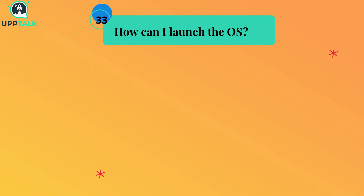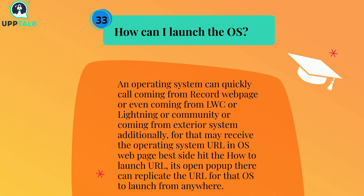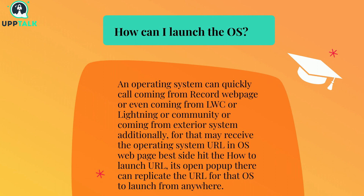How can I launch the OmniScript? An OmniScript can be called from a record web page, from LWC, Lightning, or a community, or from an external system. To get the OmniScript URL, on the OS page right side, hit the 'how to launch URL' option — a pop-up opens where you can copy the URL to launch that OS from anywhere.